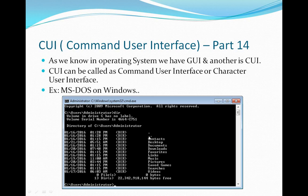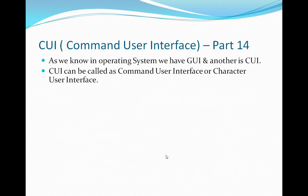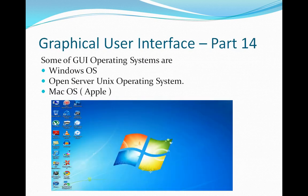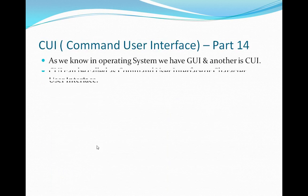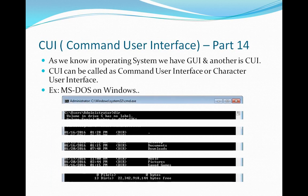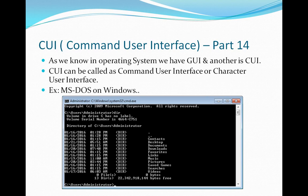For example, if you type 'dir' in MS-DOS, it will show you what different directories are available. Whereas in GUI, all of this is shown in the form of icons — you can see icons like My Computer, Recycle Bin, and everything else. In CUI, everything is shown in the form of text. That is the difference between command user interface and graphical user interface.